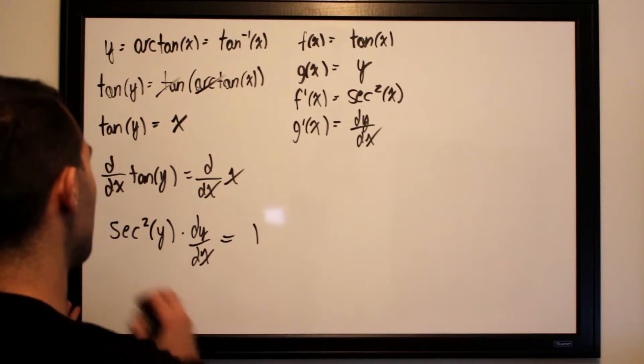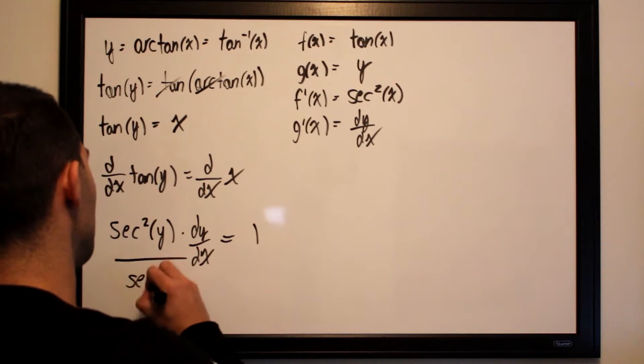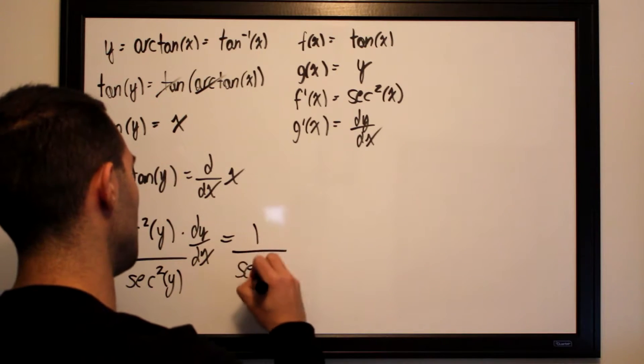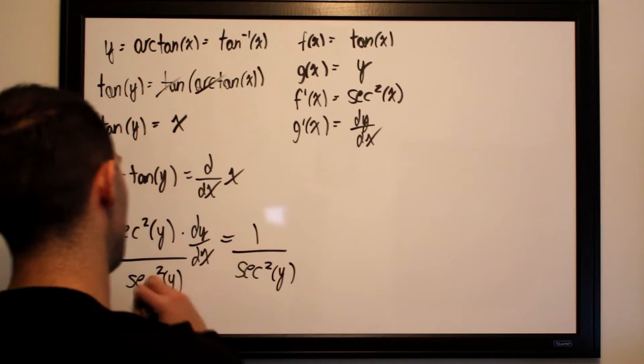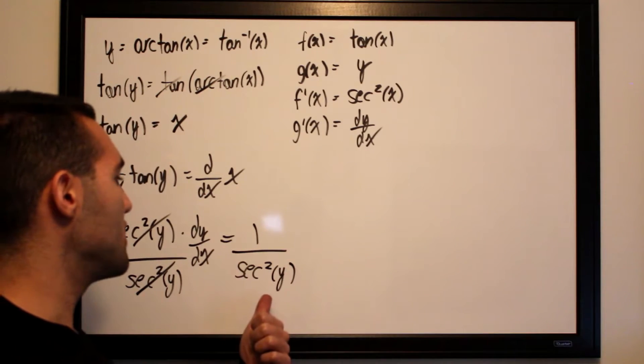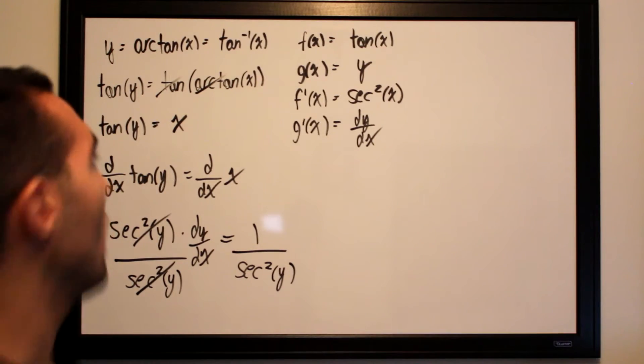So we want to isolate dy/dx. We divide both sides by secant squared of y. This cancels this. All we will be left with is dy/dx equals 1 over secant squared of y.